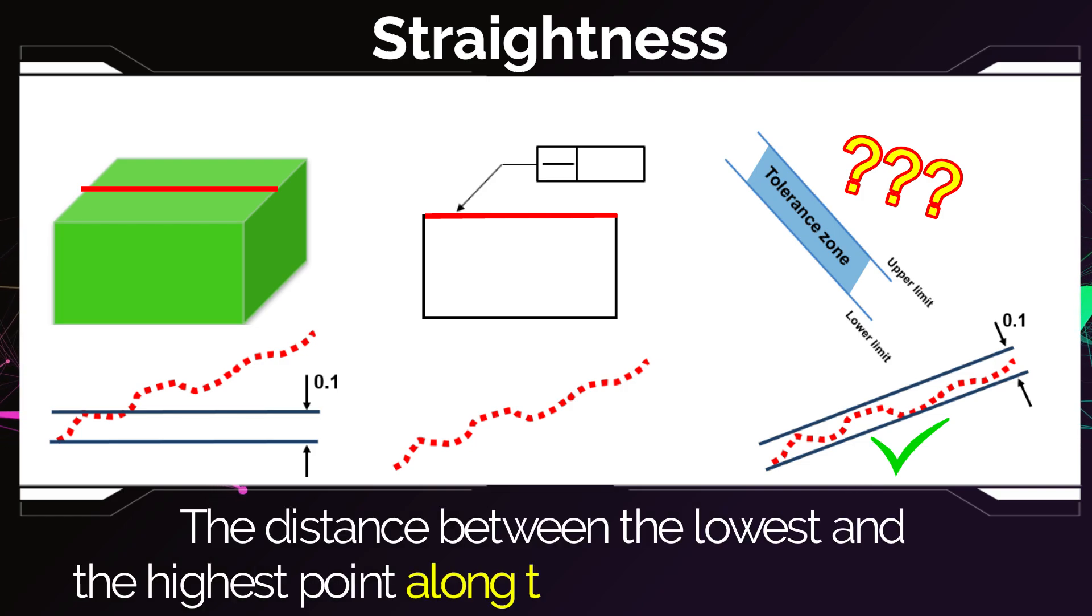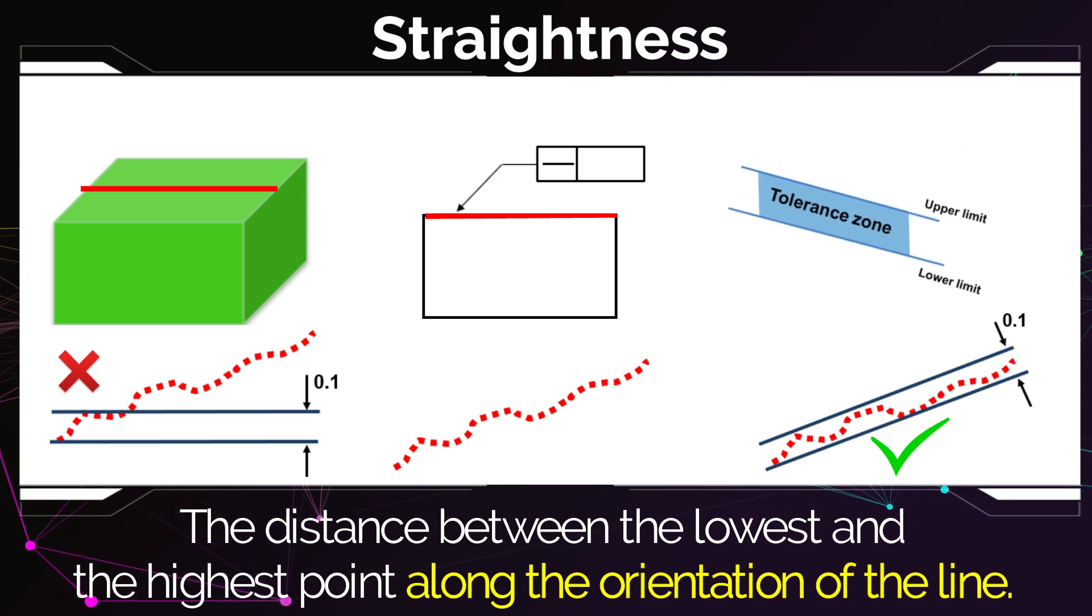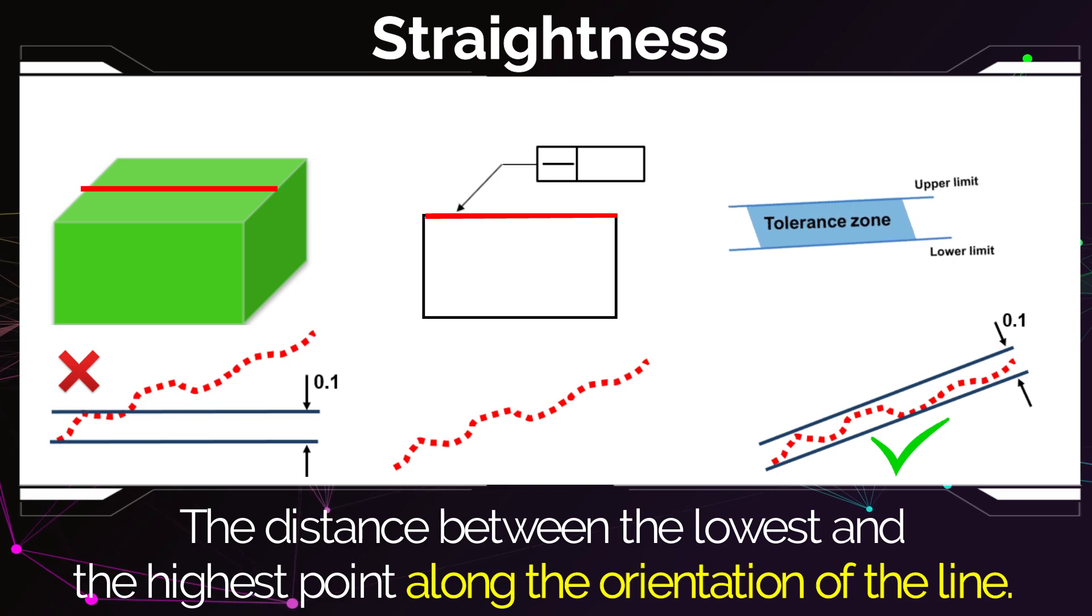because I'm not trying to control the parallelism of the line to another feature or its position. I don't care about the orientation of the line. All that I care about is that the line itself is straight. So I have to adjust my tolerance zone to fit the orientation of the real line.